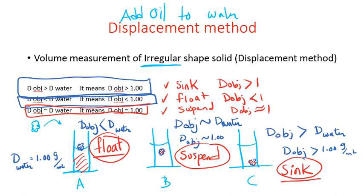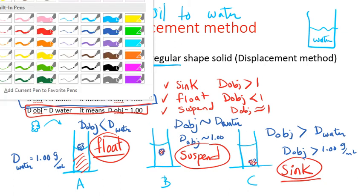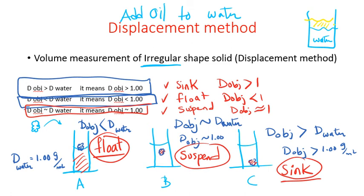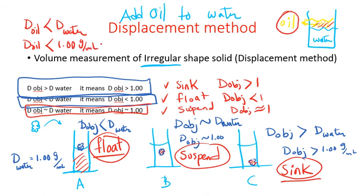If you add oil to water — assume this is water and we add oil — the oil remains on the top. What can we conclude? Oil has less density than water, or the density of oil is less than 1.00 gram per mL. You may work on many examples and consider whether the density of an object is greater than, less than, or approximately the same as the density of water. Based on our object, we may have one of these three observations.